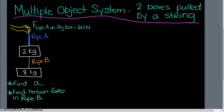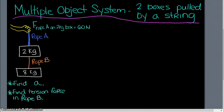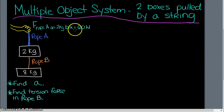Today we're going to take a look at multiple object systems, sometimes called two-body systems, though we can look at three, four, and five as well. To get started, we have a situation where somebody is pulling up on a string attached to a two kilogram box, which is attached to a second string. I labeled these rope A and rope B, then attached to an eight kilogram box. The force of rope A on the two kilogram box is 60 Newtons.